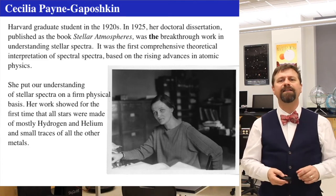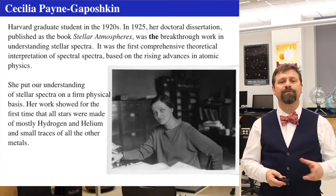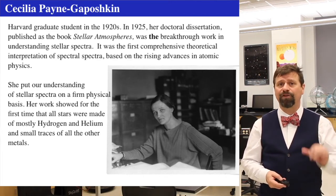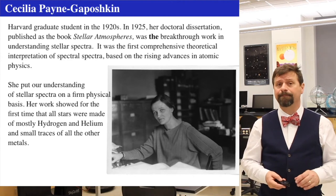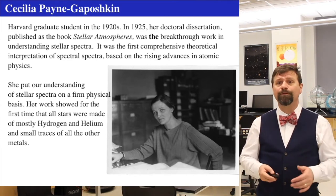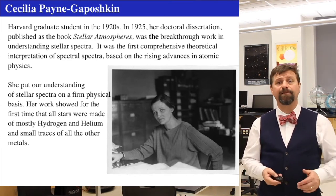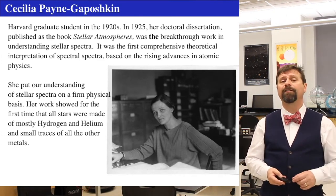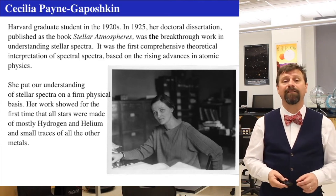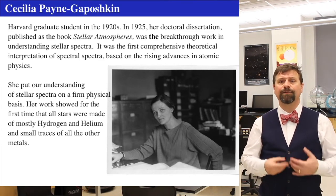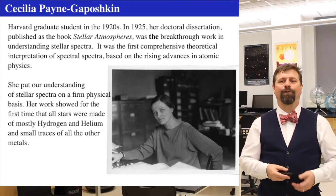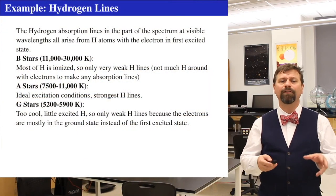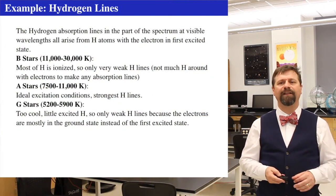Cecilia Payne-Gaposchkin discovered that stars were primarily composed of hydrogen and helium — that was their stellar composition. But only the temperature determined what the absorption features were. If stars are roughly the same chemical composition — dominantly hydrogen and helium — then the stellar absorption features are due entirely to the temperature of the background photon field. That was her breakthrough analysis using quantum mechanics and how much it takes to excite atoms at various temperatures in gaseous states.